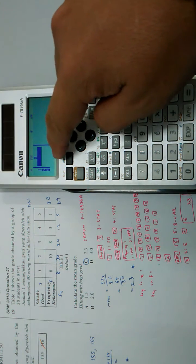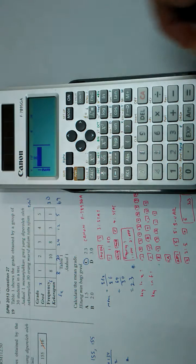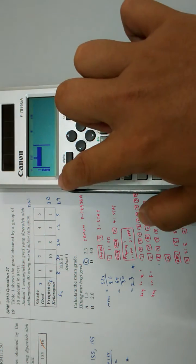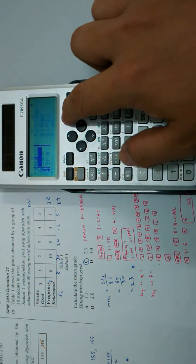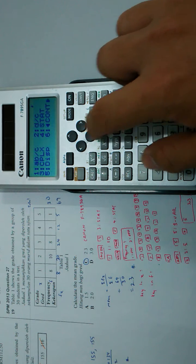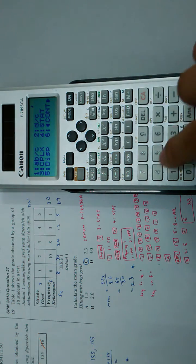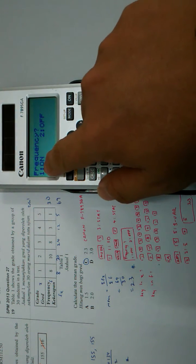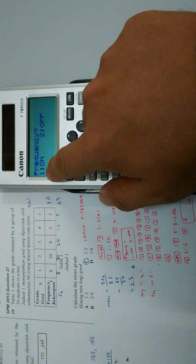But by default the calculator allows you to key in x only, without the frequency column. So you have to press Shift Mode and then Down, number 4, Stat, to switch on the frequency.